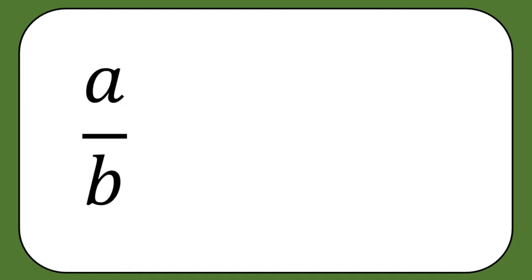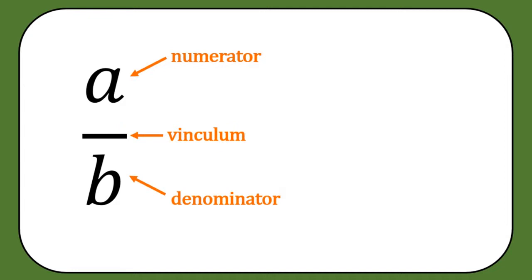A fraction is made up of three parts: a numerator, a denominator, and the line in between, which is called the vinculum. All the line represents is division. A fraction is simply a division — this is a divided by b.